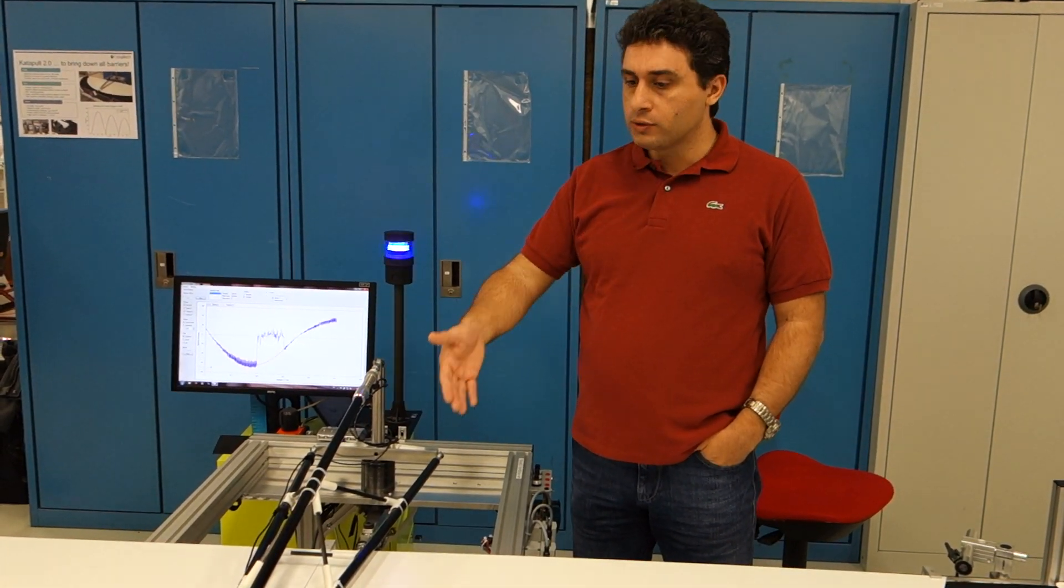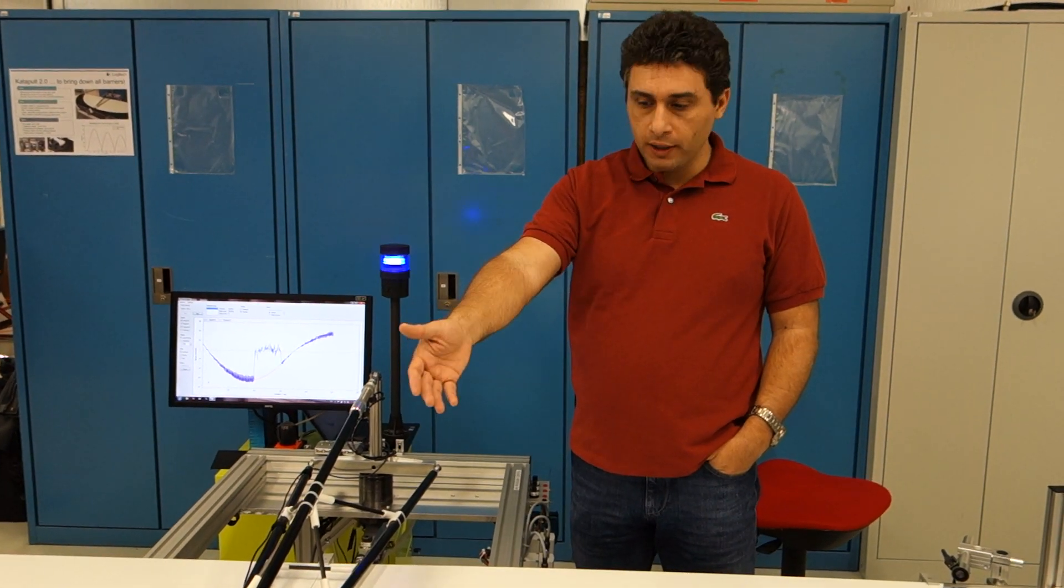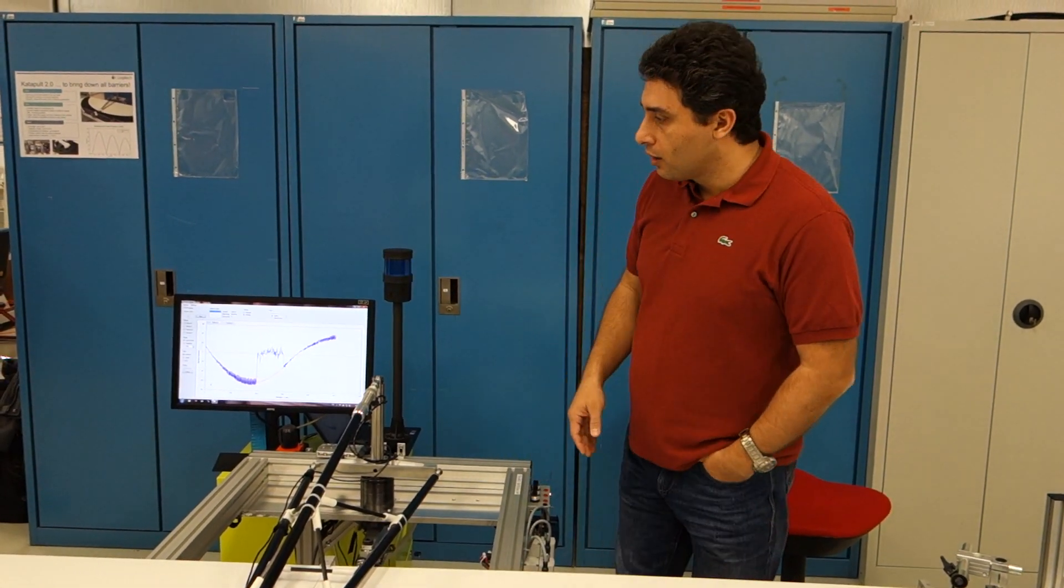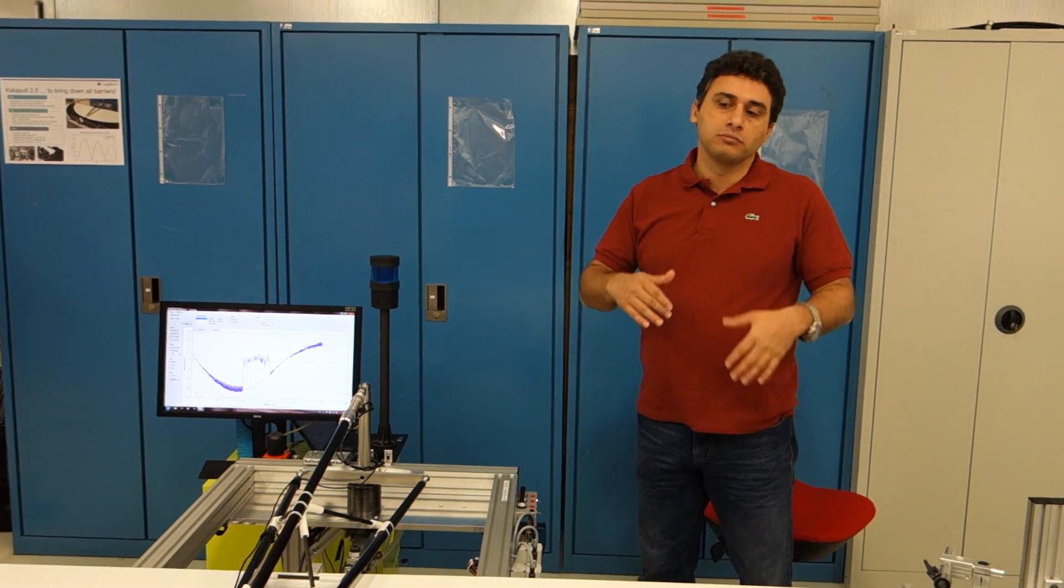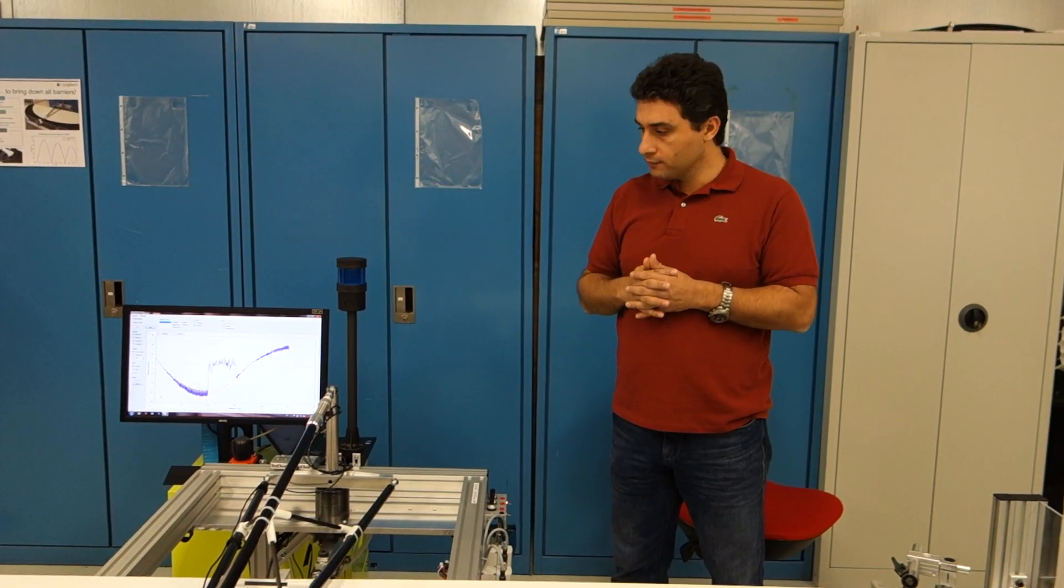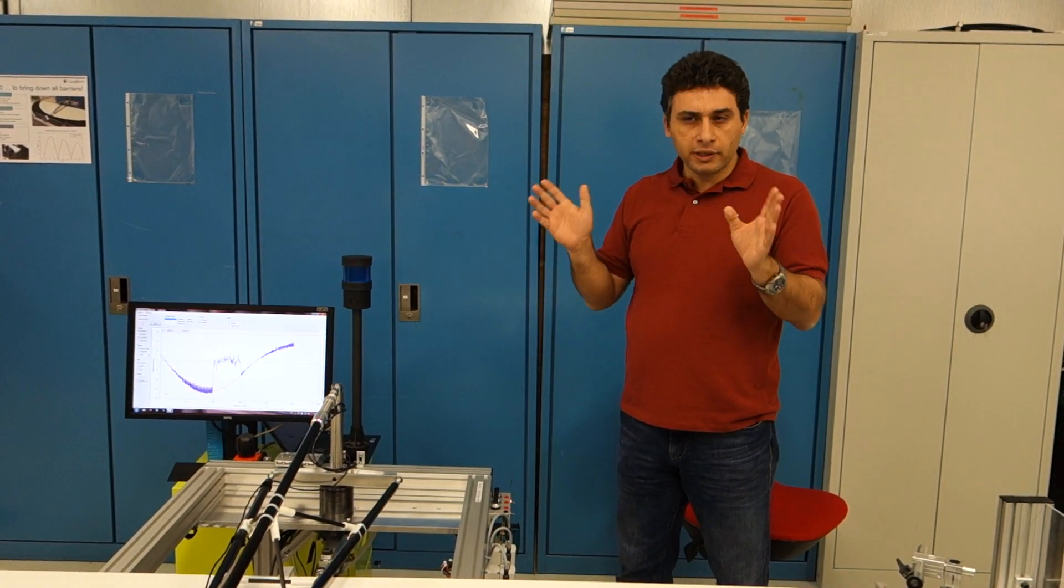So with this setup, we could verify and validate our device up to speeds exceeding 500 IPS. That is about 12.5, nearly 13 meters per second.